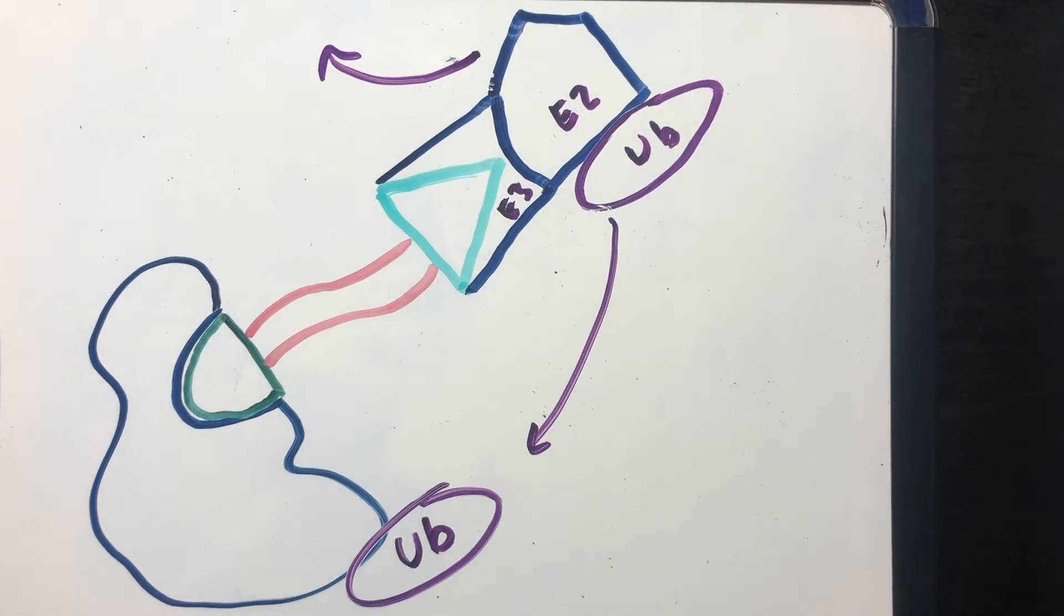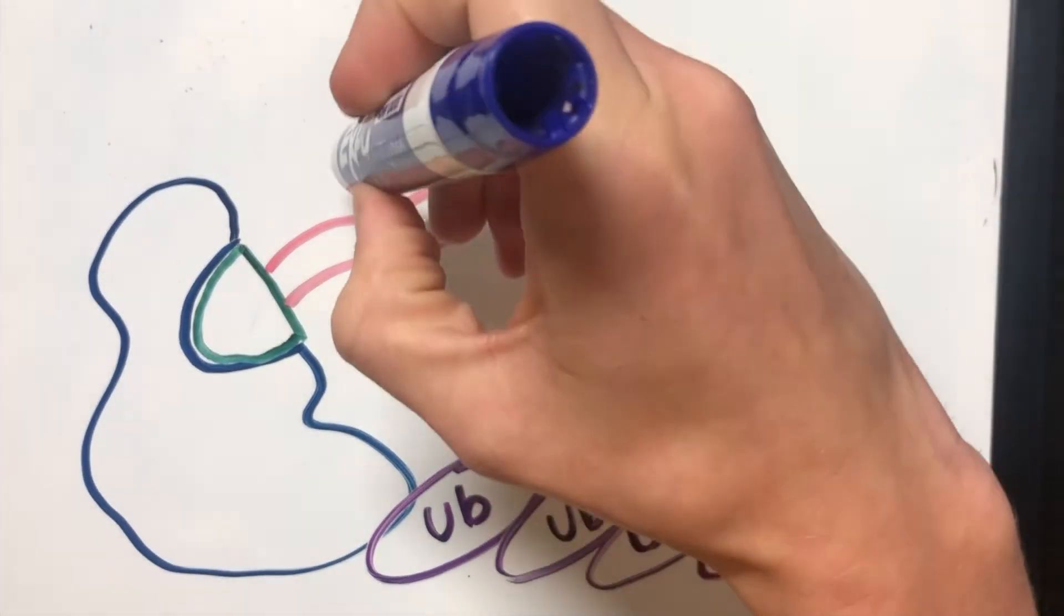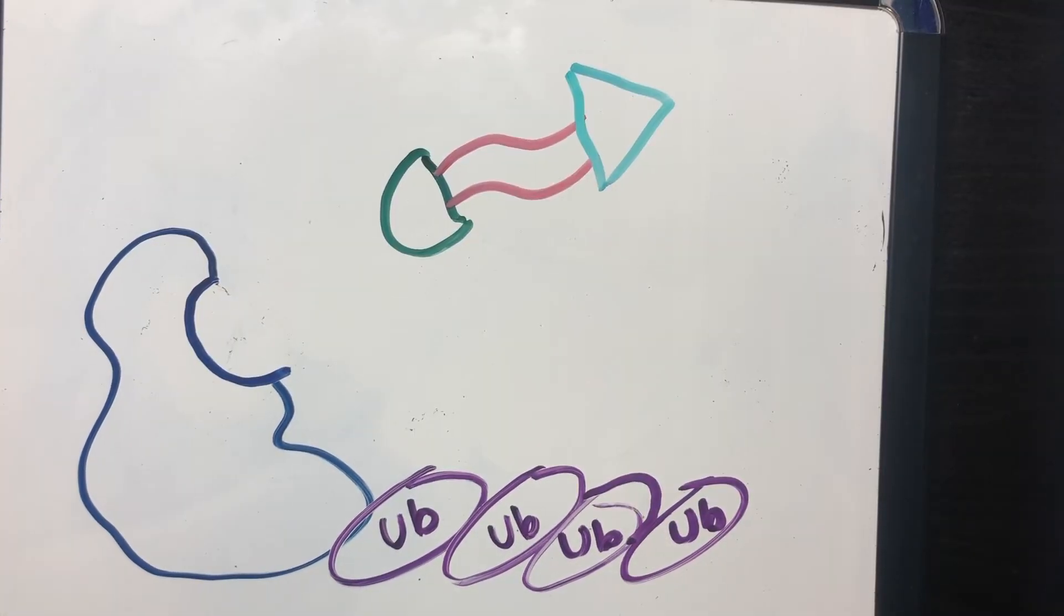After the target protein is effectively tagged through a chain of ubiquitin molecules, the E3 ligase is able to dissociate from the PROTAC as PROTAC simultaneously dissociates itself from the target protein.